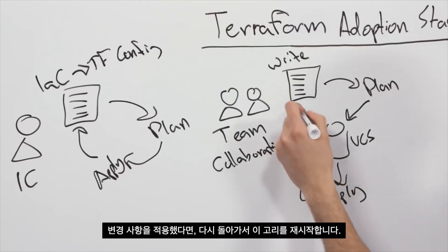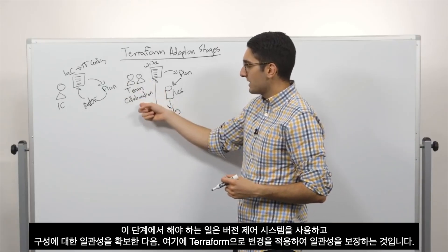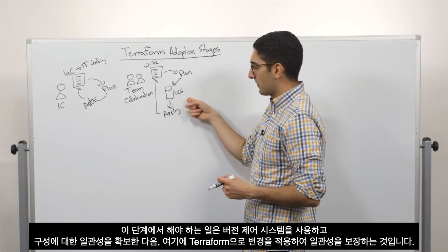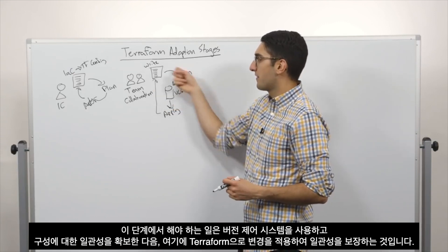And then once we've applied our change, we come back and restart our loop. So the things that we start to need to do at this phase is make sure we use a version control system to have consistency of our configuration and then drive the application of any Terraform changes off of that for consistency.